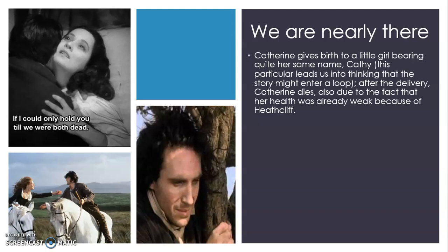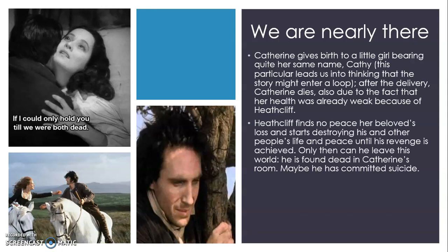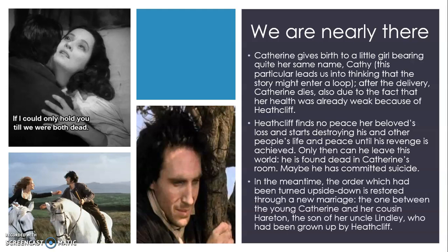It is not a good moment for Heathcliff. He finds no peace — he is so sad but also so angry at Catherine for having left him through her death. He starts destroying his own life and the happiness of all the people around him. Only when he has his revenge does he leave this world; he is found dead in Catherine's room, and perhaps has committed suicide, though Emily Bronte is not very clear on that. Meanwhile the order is re-established through another marriage, because Catty, the young daughter, falls in love with Hareton, who was her cousin and had been raised by Heathcliff.